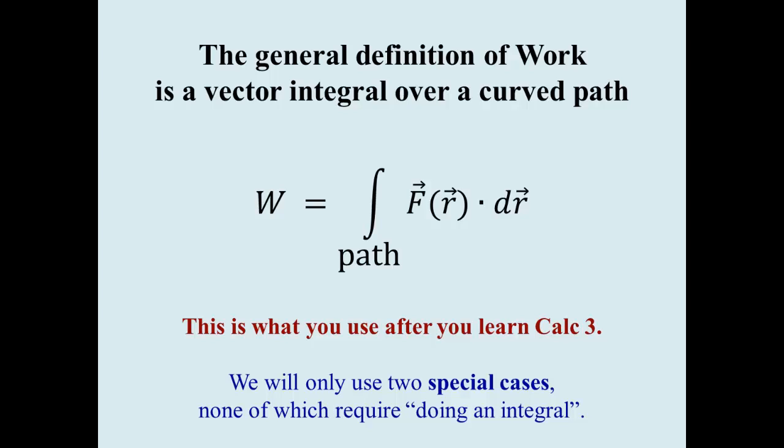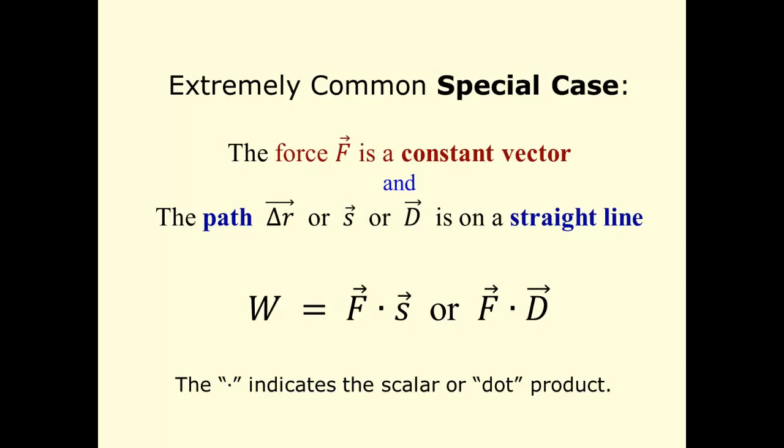We will not touch anything having to do with those kinds of curved paths or actually doing any integrals. What we will do is look at two special cases that contain all of the other physics. The first one has to do with the vectors. That special case that we can handle is one where the force is a constant vector and the path is a straight line. That path might be called delta R, or S vector, or D, the displacement vector, or the distance vector.